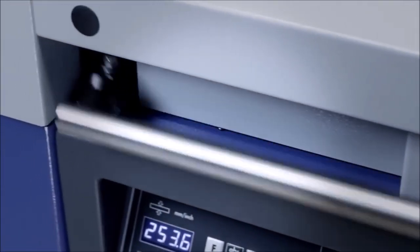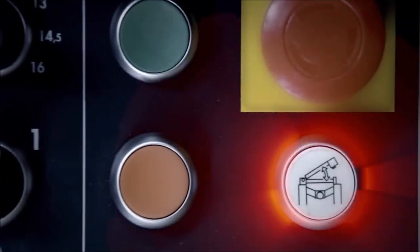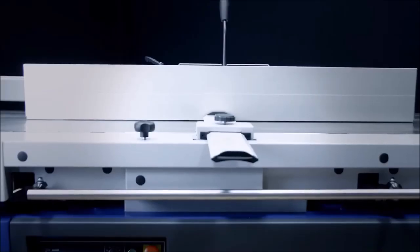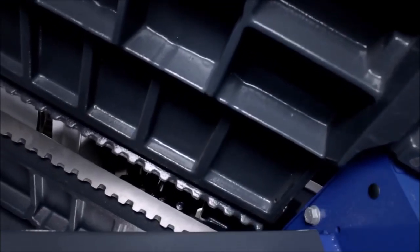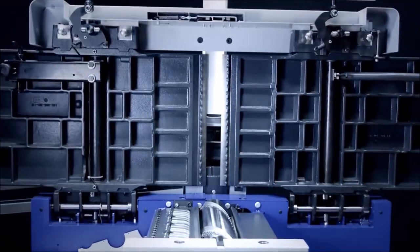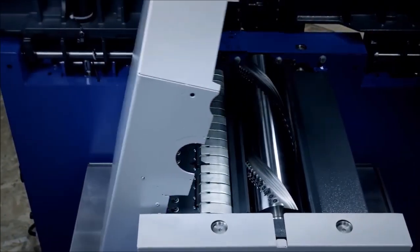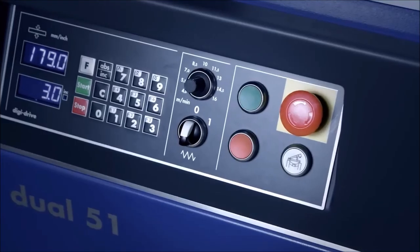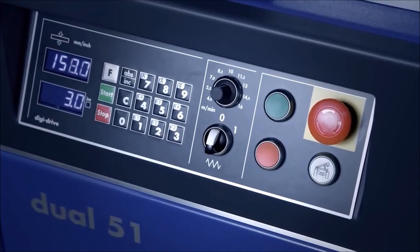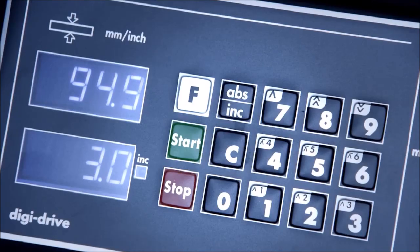A standout feature of the new planer is its tiltable planing table—the first for Format 4—enabling concave and convex joint finishing. The planing fence is thoughtfully designed to save space, allowing the planer to be positioned directly against the workshop wall. The integrated comfort guard in the machine chassis can be folded away, offering unrestricted movement during planing.